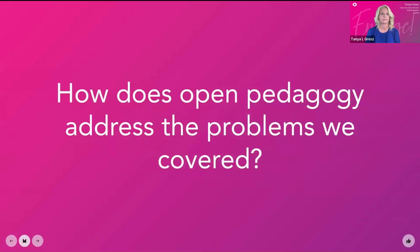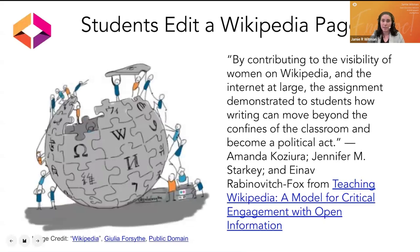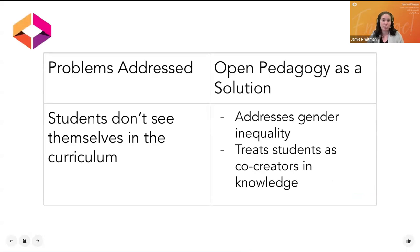How does open pedagogy address these problems? Let's look at examples. The first is a Wikipedia assignment for a Gender and Technology course at Case Western Reserve University. Women — especially those who have made notable achievements in STEM — are underrepresented on Wikipedia. This assignment gave students experience in public writing extending beyond the classroom while tackling hands-on questions of gender inequality. This addresses the problem of students not seeing themselves in the curriculum, treating students as co-creators of knowledge.